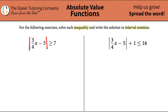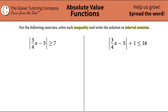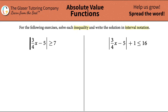We have the absolute value of 3/4 times x minus 5, which is greater than or equal to 7. Remember, the alligator always chomps down on the bigger number, so the absolute value is greater than or equal to 7. Now remember, an absolute value always outputs a positive answer, so we have to bring in the negative answer as well.